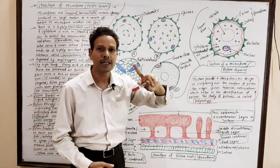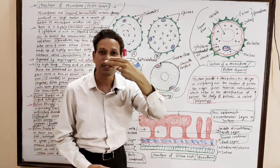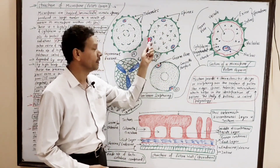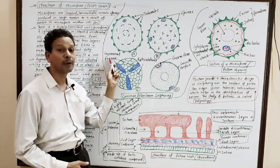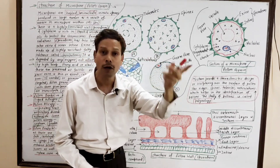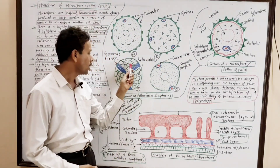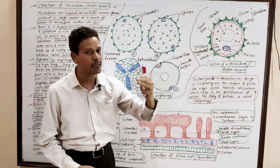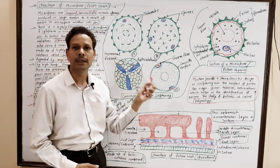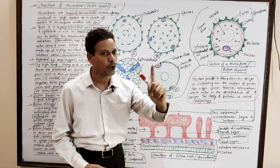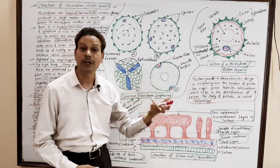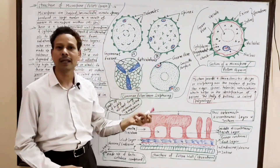At certain places the exine remains thin; that particular area is named a germ pore. The germ pore may be rounded or elongated — if elongated, it is named a germinal furrow. Generally, in monocots only one germ pore is present — the monocolpate condition. While in dicots like gram, scissor, Arachis, and Cassia, there are three germ pores or grooves — the condition is tricolpate.